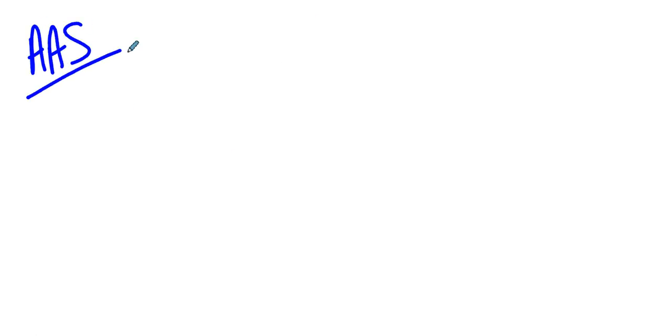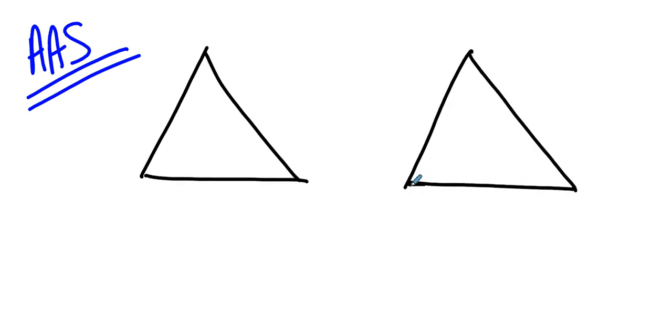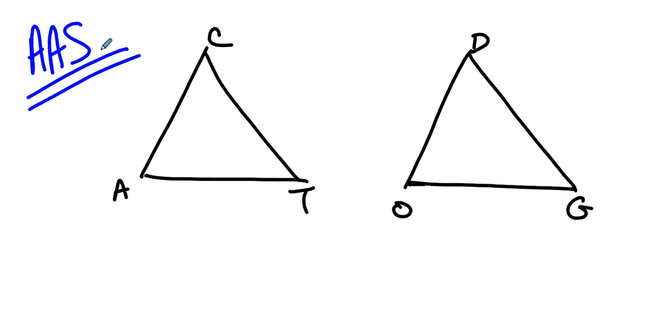So then we start thinking about the other option: is angle-angle-side legitimate? Angle-angle-side is also legitimate for the following reason. Let's imagine we have two triangles — let's give them names. This will be triangle CAT and this will be triangle DOG, and we'll set up what angle-angle-side means.